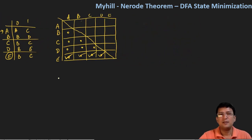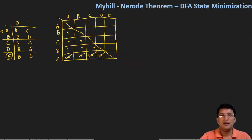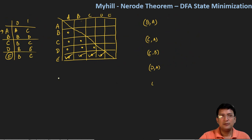Now we go to step three of the Myhill-Nerode theorem. In step three, we take all the unmarked pairs and examine their transitions. The pairs to check are: BA, CA, CB, DA, DB, and DC.